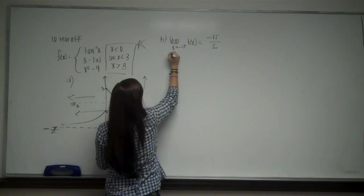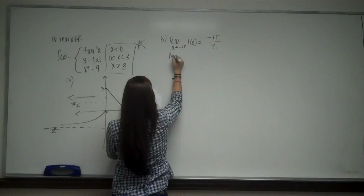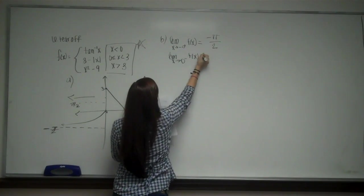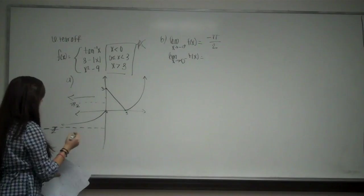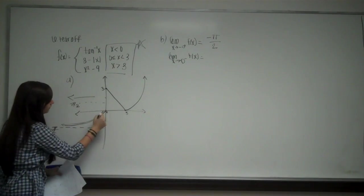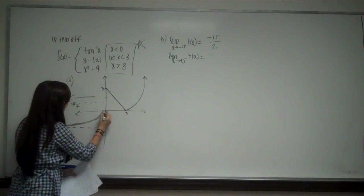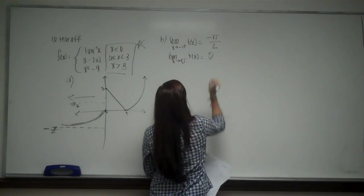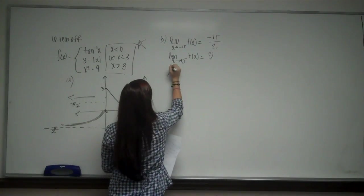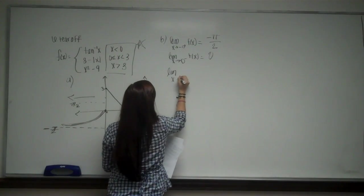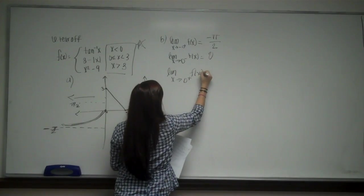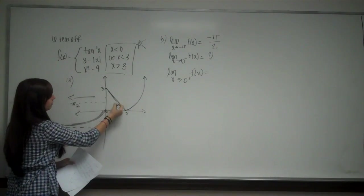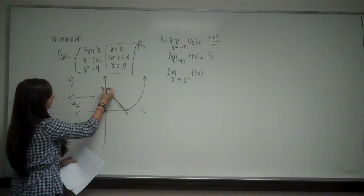And now they want to know the limit as x approaches 0 from the left of f of x. So we're going to be looking at this graph as we go to the left. And as it goes from the left, it goes to 0. And now we're going to look at the limit as x approaches 0 from the right of f of x. So because we're coming now from the right, which is the positive, we're approaching 3.